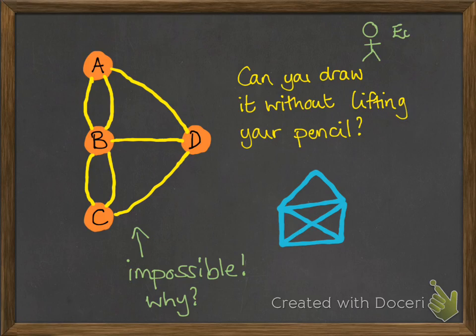That brings us to a guy called Euler — you say it 'Oiler', not 'Yuler'. He was a mathematician nearby in Petersburg who was given this problem, and he actually thought it was a little bit trivial, a bit beneath him. But it got him thinking about graph theory and the things that you could map out like this and the ideas you could come up with.